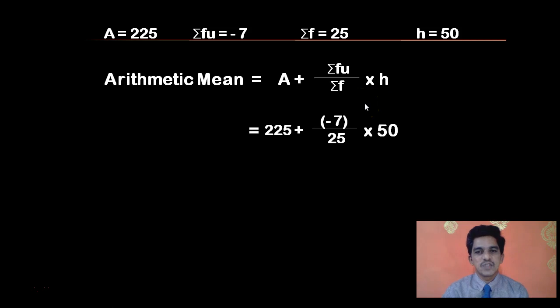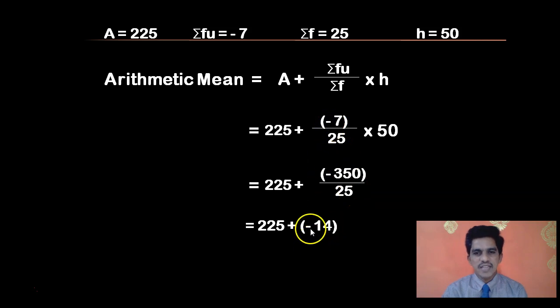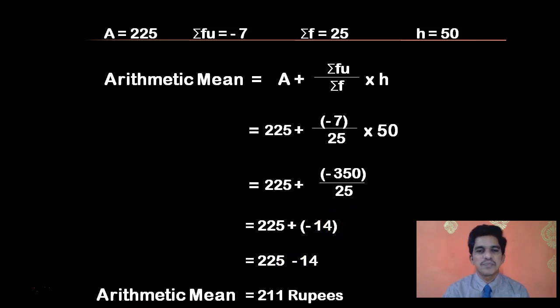So, we have four values here. A is actually 225. Sigma fu is minus 7. Sigma f is 25. H is 50. Let us write the formula and substitute the values. 225 plus sigma fu is minus 7 by 25 into 50. 25 and 50 cancel, giving 2. So, minus 7 times 2 is minus 14. 225 minus 14 gives us an arithmetic mean of 211 rupees. So, this is how you can calculate the arithmetic mean using step deviation method.